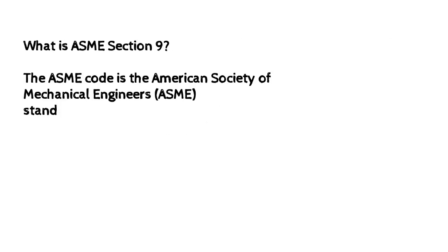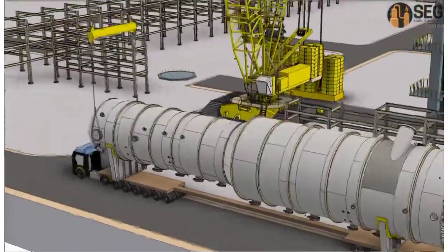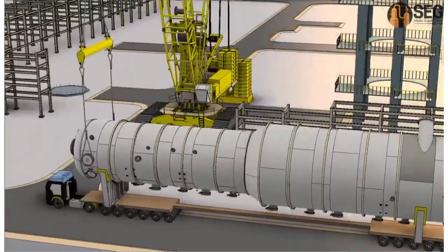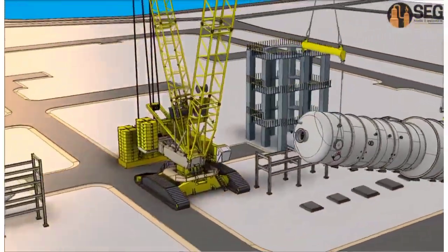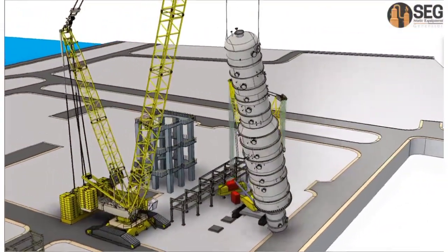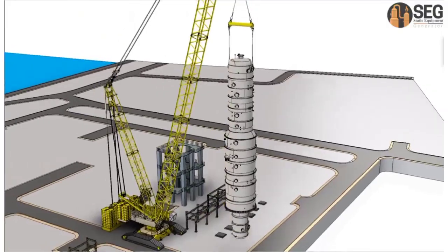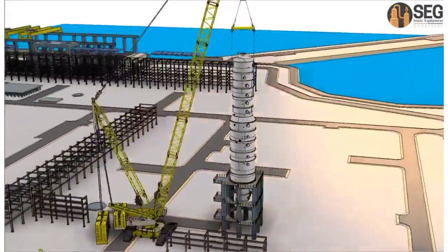What is ASME Section IX? The ASME Code is the American Society of Mechanical Engineers standard that regulates the design, development and construction of boilers and pressure vessels. ASME Section IX specifies the requirements for the qualification of welders and the welding procedure specifications.